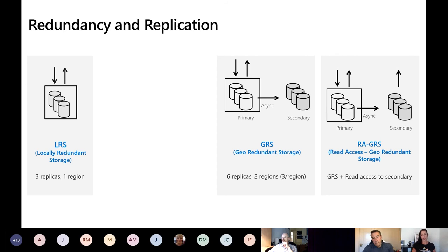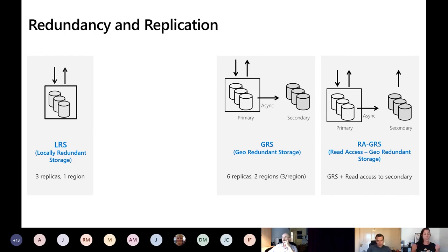Next we have read access geo-redundant storage — a step up from GRS. This is just like GRS except we add a read access capability. You still get six replicas with asynchronous replication to your secondary site, but you can also read data from the secondary site. Why would you do this? To get your data closer to your end users. If your applications have latency and you're hosted in Europe but have users in New York, hosting that data closer to them lowers latency so they can access it without issue.